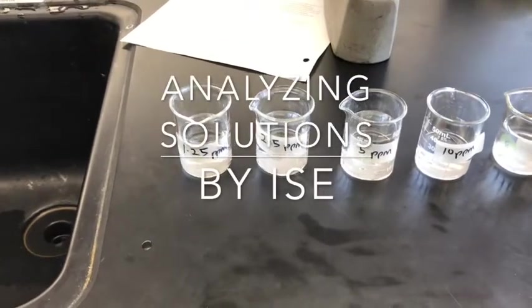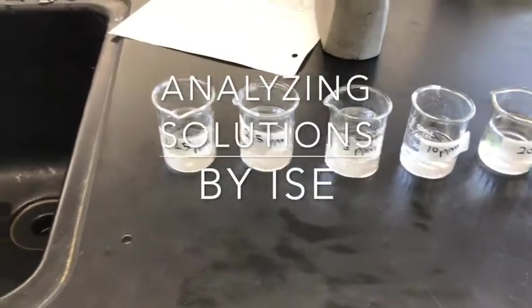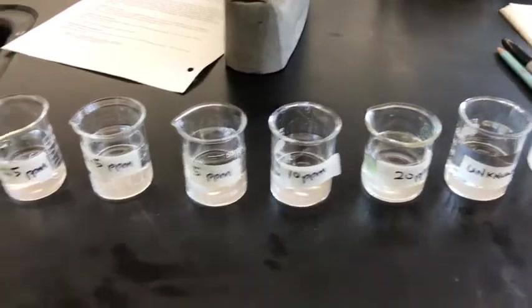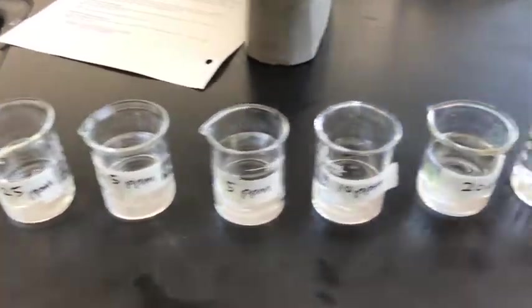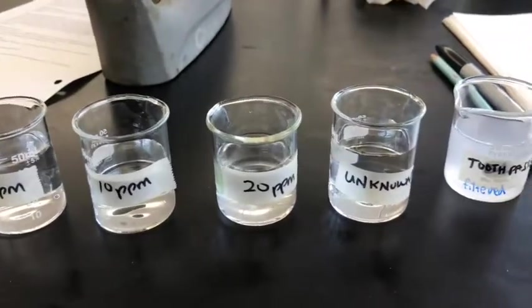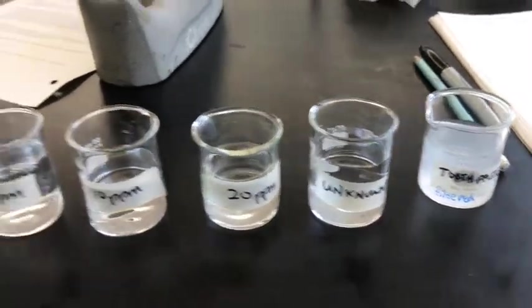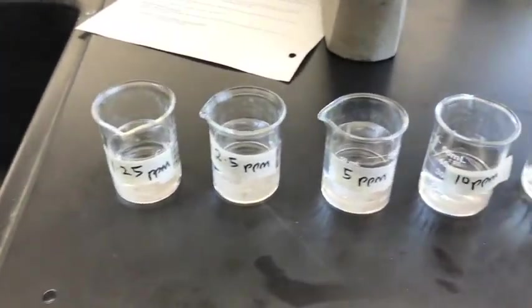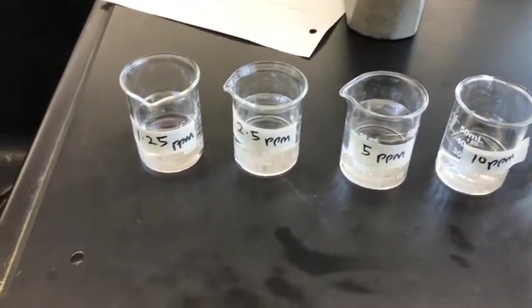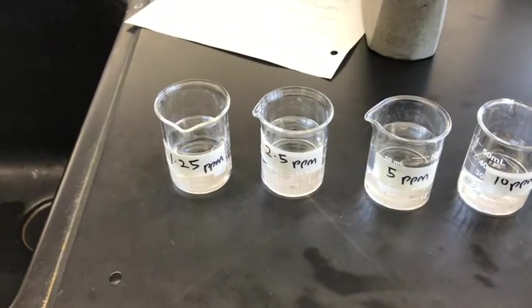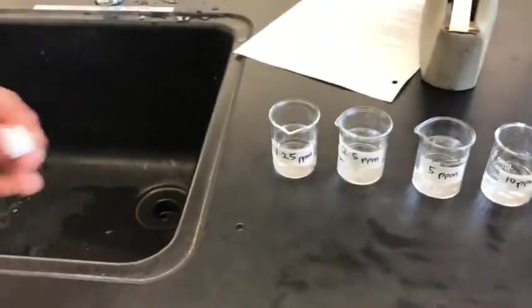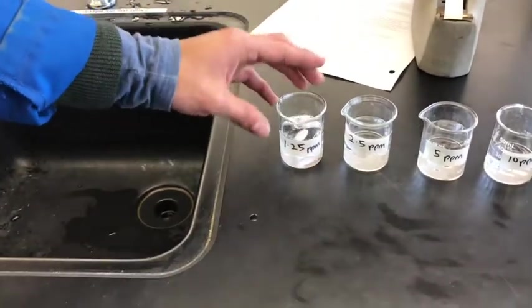So now we have prepared our calibration solutions and if you notice we have transferred all of them into 50ml beakers: 1.25 all the way to 20 ppm, then the unknown and finally the toothpaste. Whenever we run calibration solutions we always want to go from the lowest concentration to the highest because this reduces the number of rinses we need to do between runs.